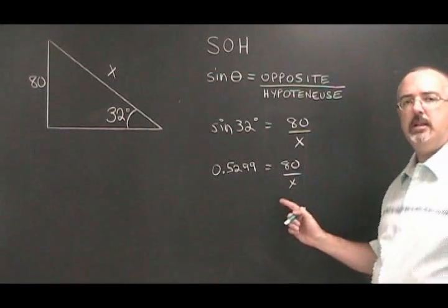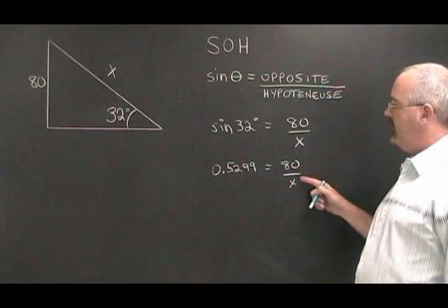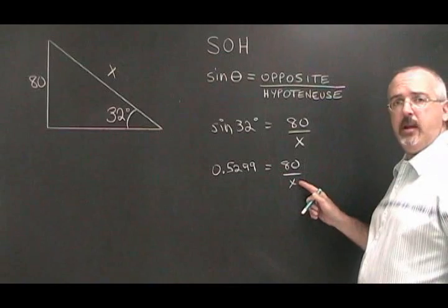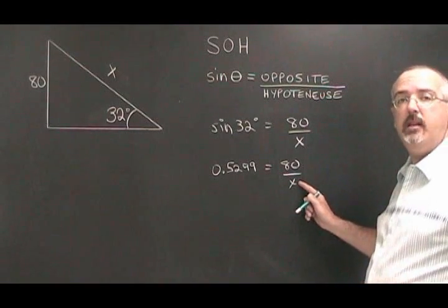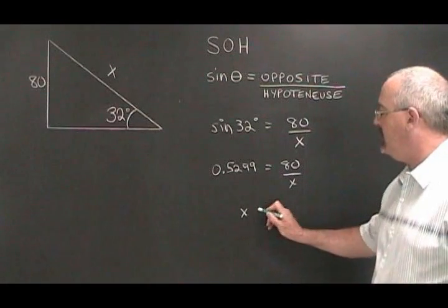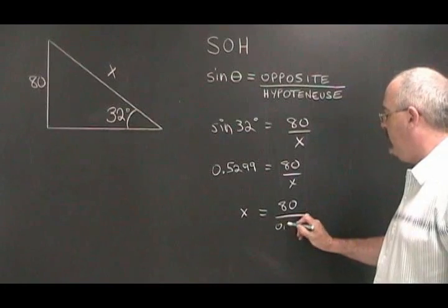Now we encounter something that we don't see very often in math before we get to trigonometry. Our variable is in the denominator. The quick, easy way to deal with this is what we call doing the trade. We trade positions between the x and the 0.5299.